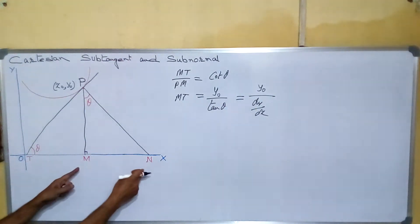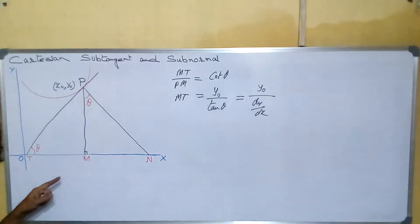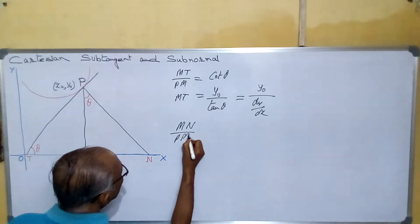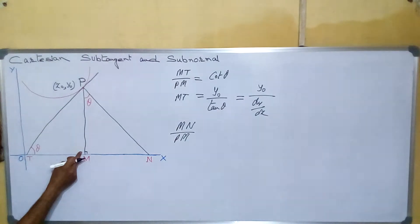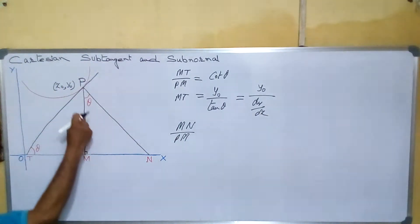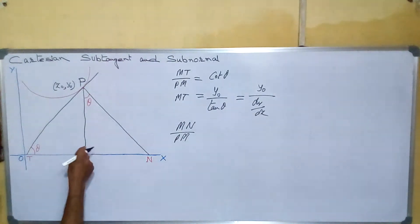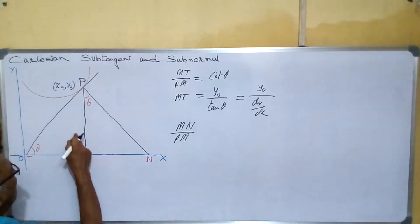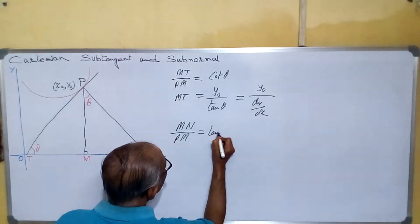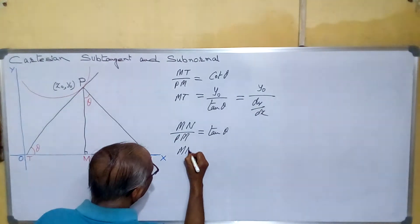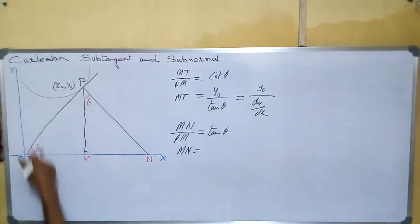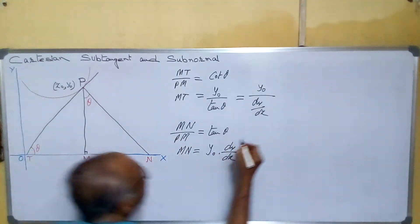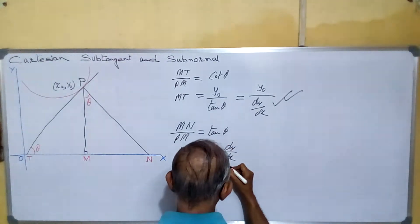Similarly, MN is known as the sub-normal. We can write MN/PM. If this angle is θ, the adjacent angle is 90°, making the next angle 90° − θ, and then this angle will be θ. So MN/PM equals tan θ (perpendicular by base). Therefore MN equals PM·tan θ, and since PM equals y₀, sub-normal equals y₀·(dy/dx). So this is called sub-tangent and this is called sub-normal.